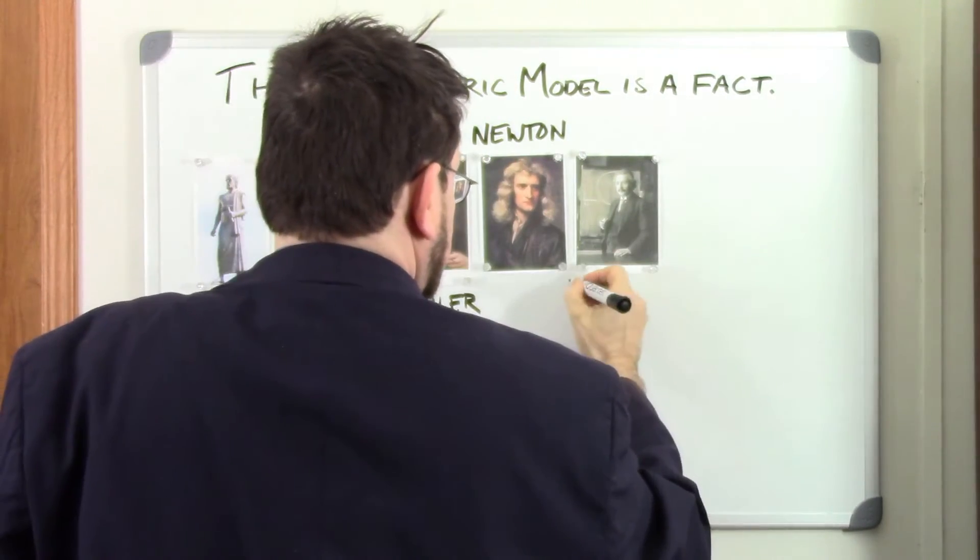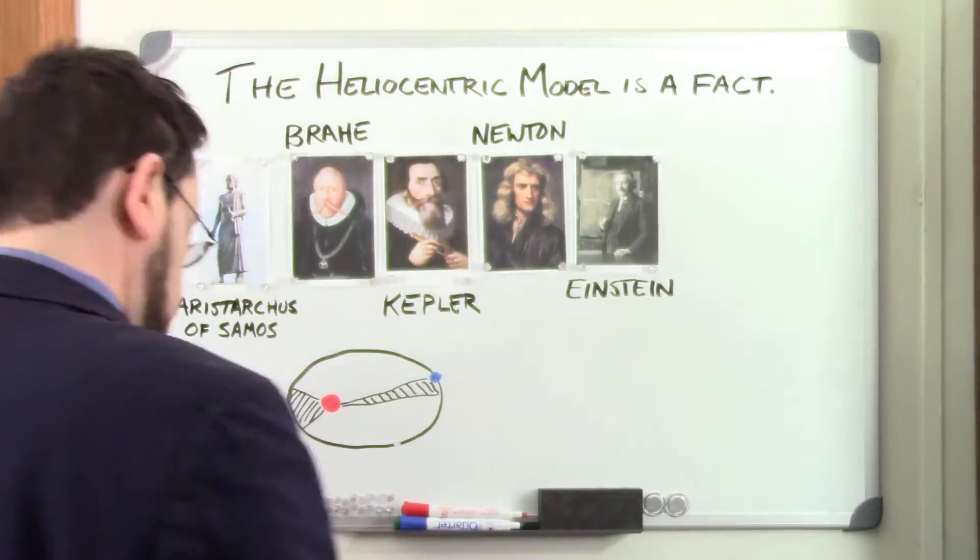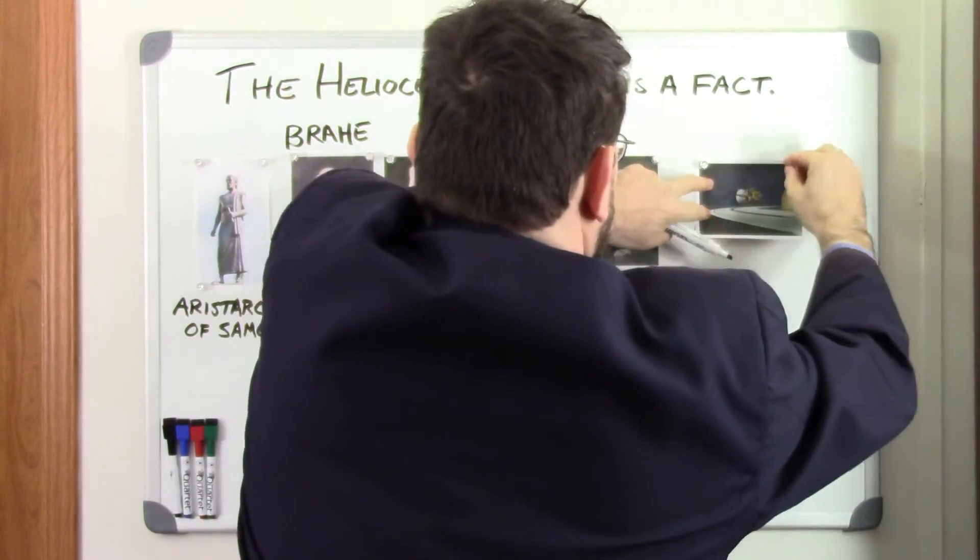By the mid-20th century, we had the technology to measure and predict the positions of the sun, moon, and planets very precisely.